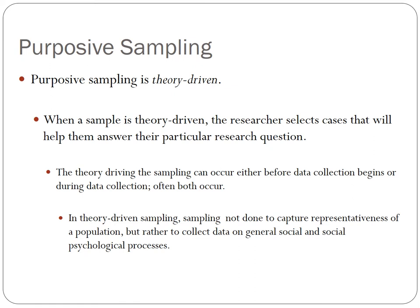In-depth interviewers use purposive samples because they want to develop a theory about some social experience, some social process, or some particular type of social action. To do this, they try to sample individuals who have had those social experiences, experienced those social processes, or acted in ways in the social world that are of interest to the researcher. Because of this focus, the sample isn't chosen at random but rather purposely selected for those who can provide data to help answer the theoretical question.